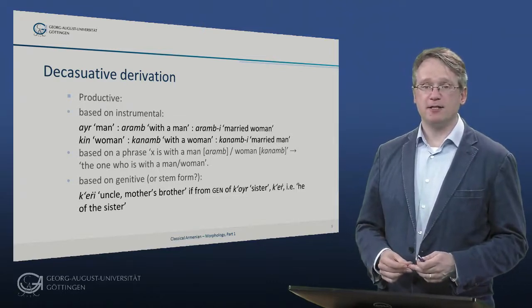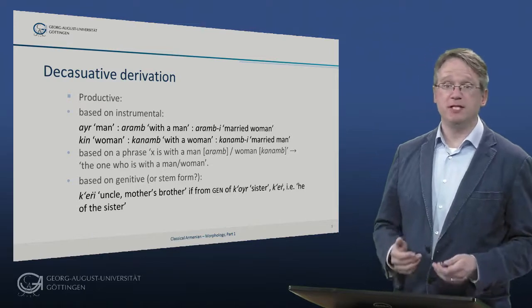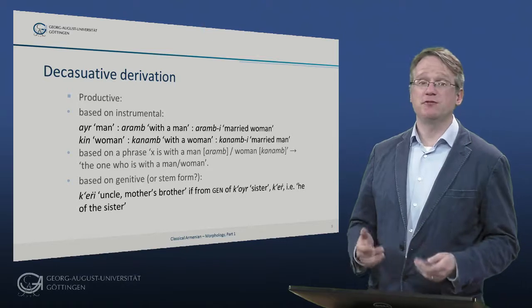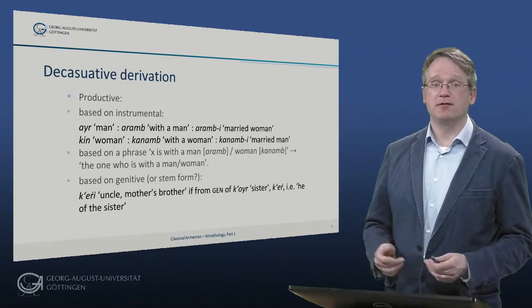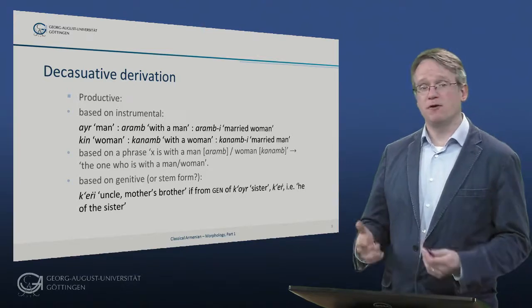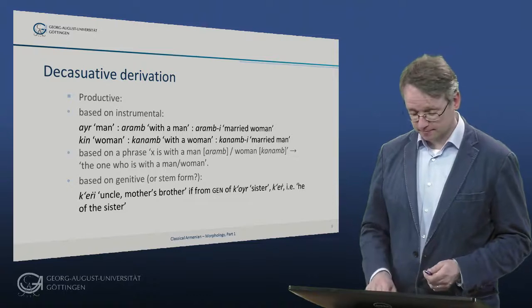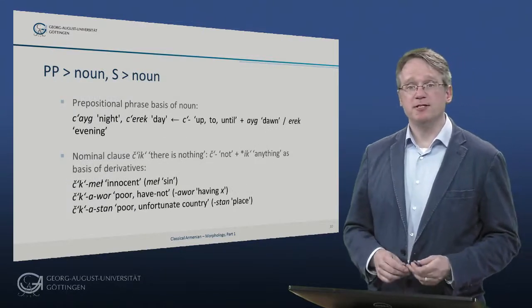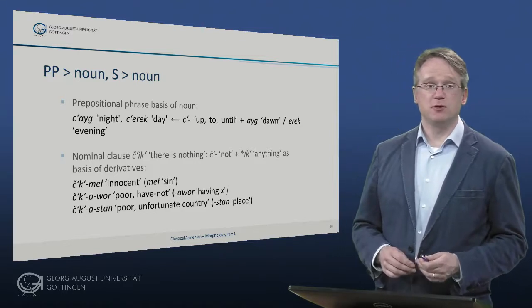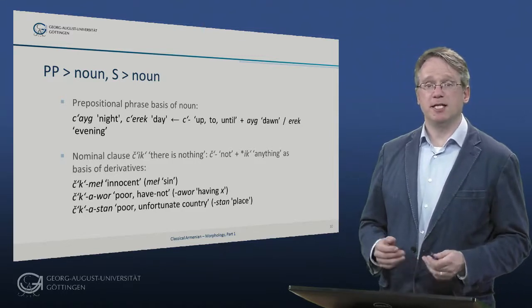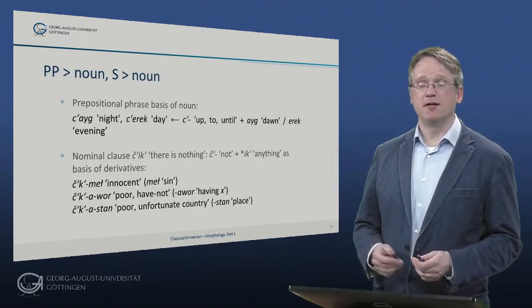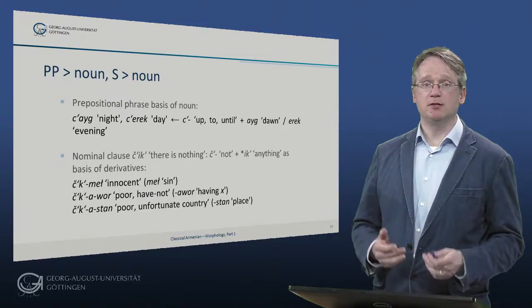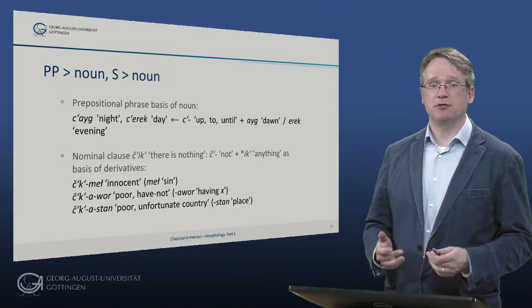A case of a form derived from the genitive could be kerri – uncle, the mother's brother – if this is from the genitive of kuir – sister – namely ker, meaning he of the sister. A prepositional phrase is the basis for the words zeig – night – and serek – day. They are formed with tse – up, to, until – and eig – dawn – and jerek – evening, respectively.